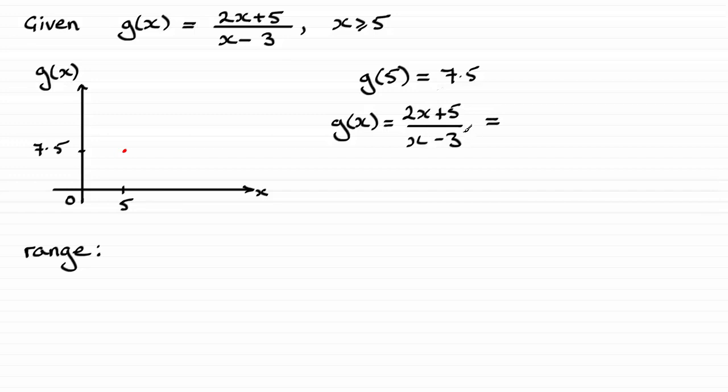So I can see what the behavior is as x gets larger. So 2x divided by x, well that's just going to be 2. And then we've got the 5, and that's divided by x, so we'll put that as 5/x.